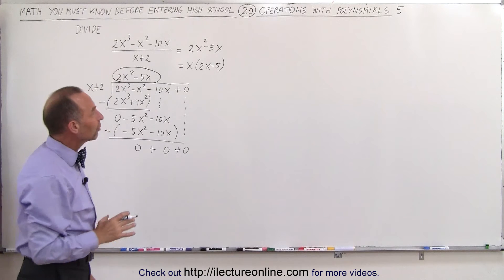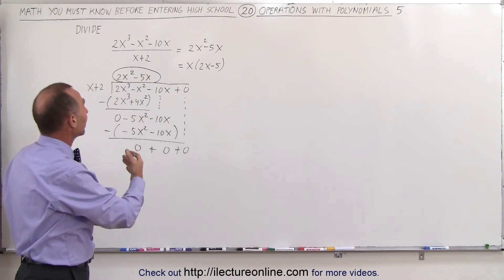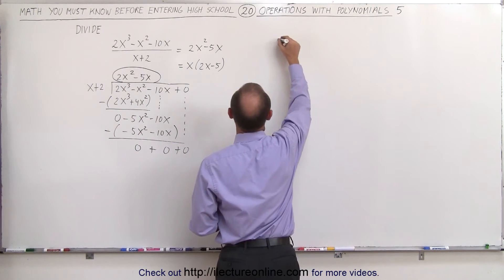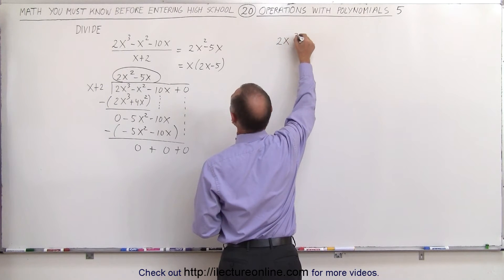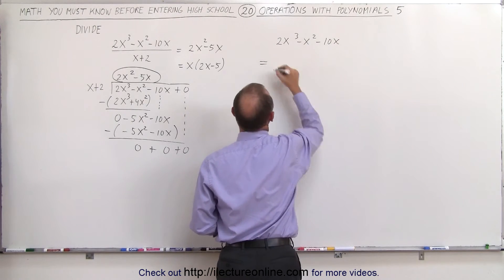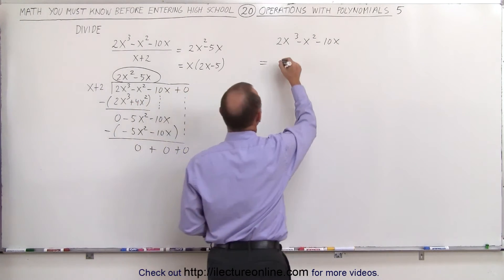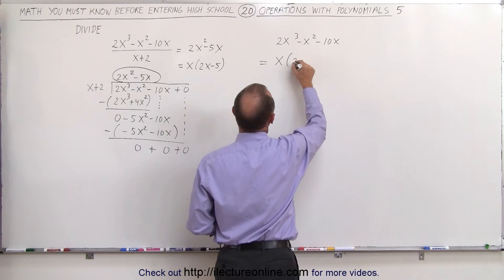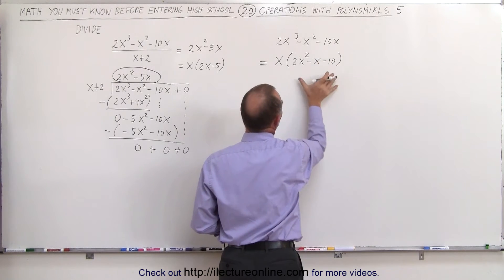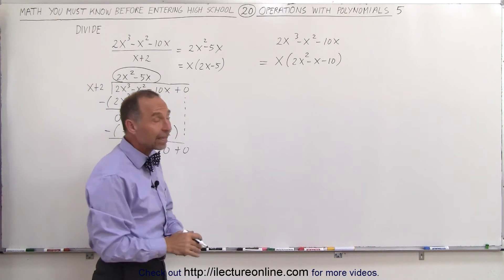So how else can we do this problem? Well we can do that by factoring the numerator and then dividing or simplifying if there's a common factor. Let's take the numerator 2x³ - x² - 10x and first we can see that you can factor out a common factor x. That leaves us with 2x² - x - 10.